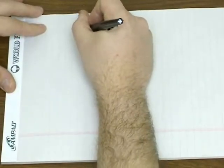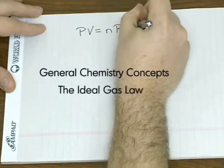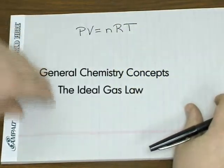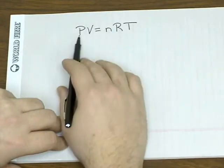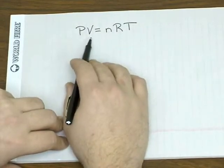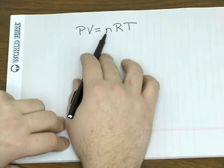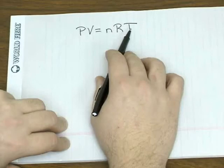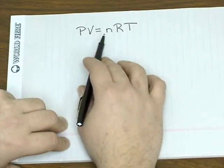The ideal gas law is typically written PV equals nRT. What the ideal gas law does is it takes the four main variables that affect gas behavior: pressure, volume, amount in moles (N stands for moles), and temperature, and puts them all into one equation.